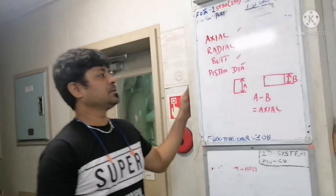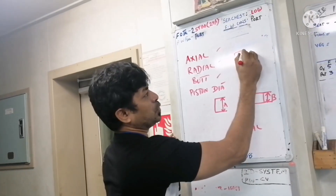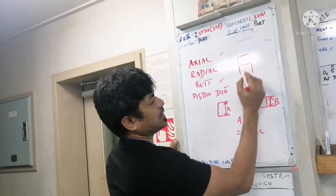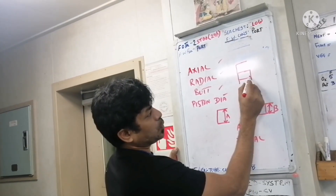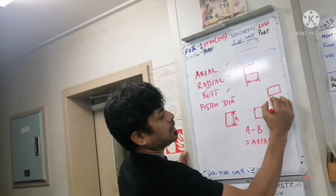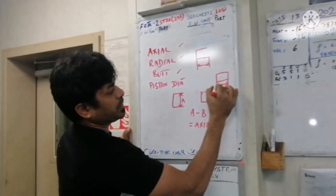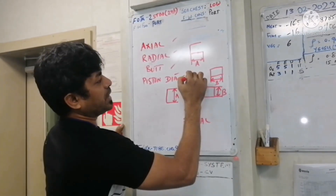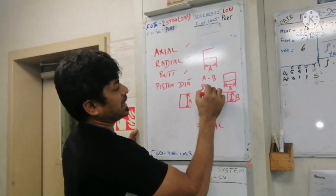For radial clearance, you take the measurement of the piston ring groove depth, which is A, and you take the thickness of your piston ring, which is B. So A minus B value will be your radial clearance.